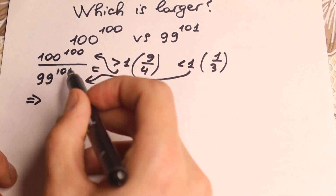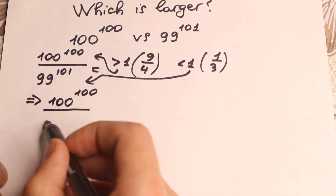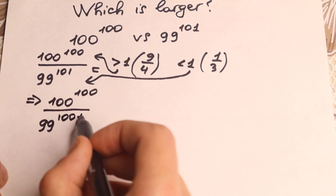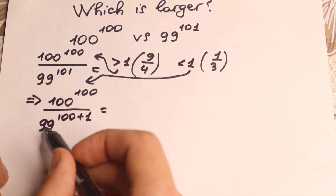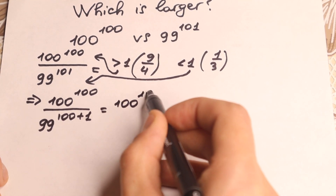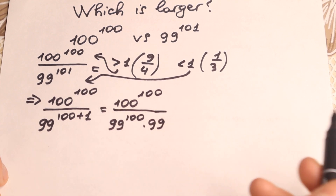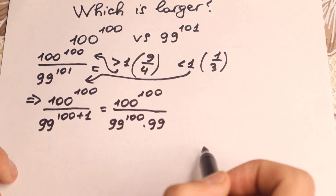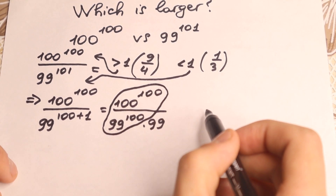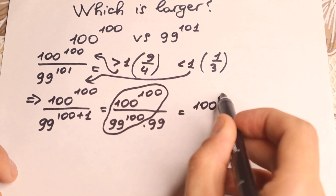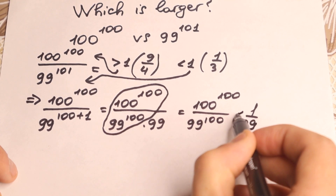So how can we divide it? 100 and 99 are close numbers, so we can write the numerator as 100 to the power 100 and the denominator as 99 to the power 100 plus 1. Using power rules, we can write that as 99 to the power 100 times 99 to the first power. So we have 100 to the power 100 over 99 to the power 100 times 99. We can group these elements and rearrange: 100 to the power 100 over 99 to the power 100, times 1 over 99.